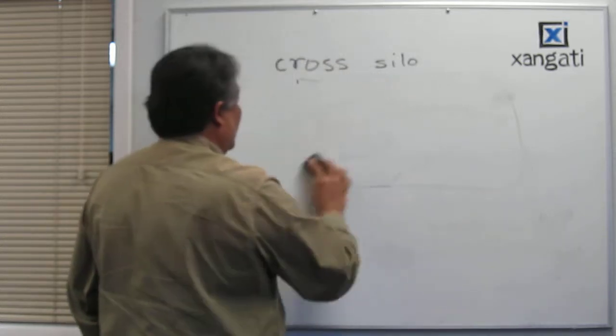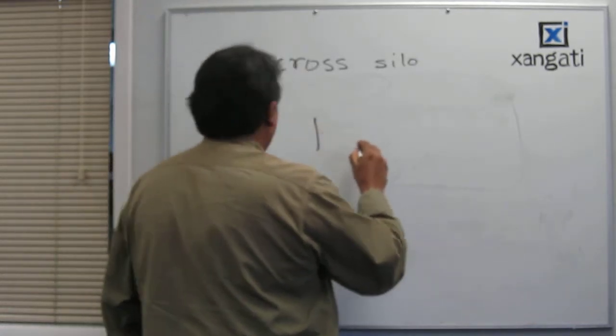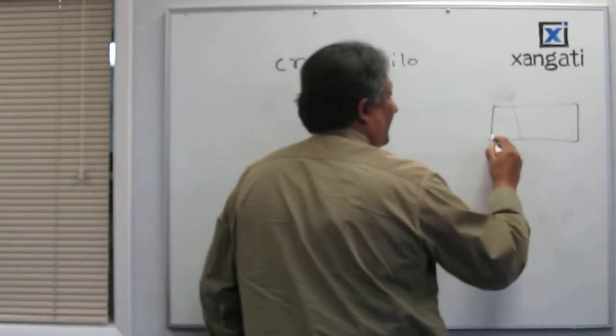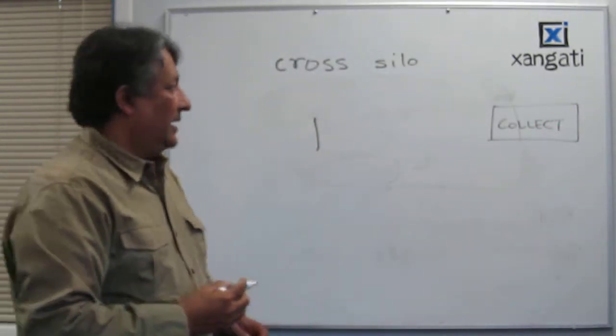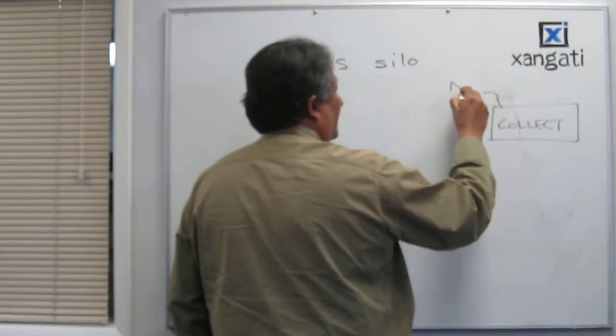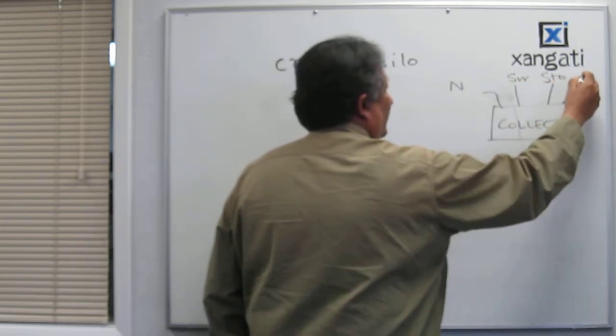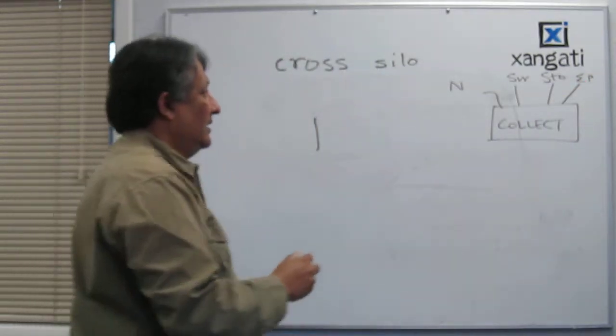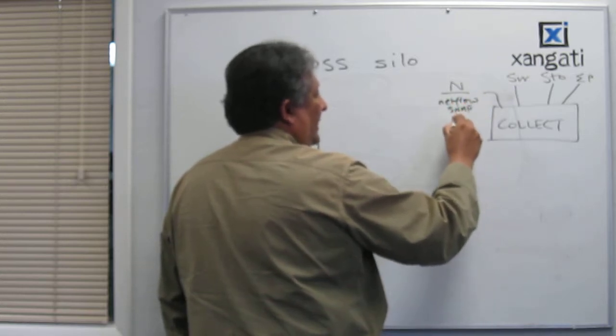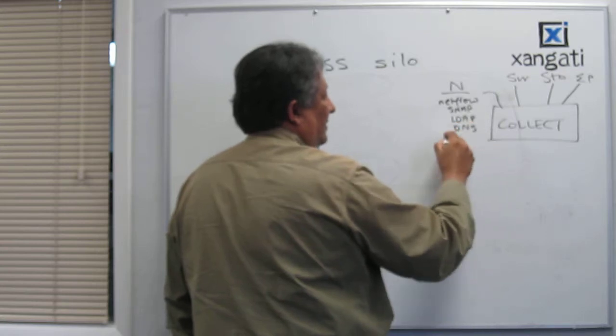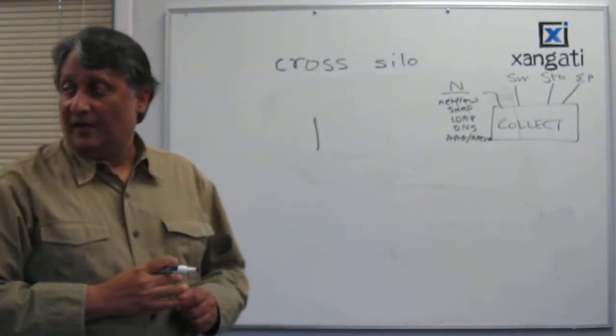What I'm going to talk about just quickly is what Zengati does. Zengati has something called collection. And it basically deals with network, server, storage, and endpoints as of today. Network has things like NetFlow, SNMP, LDAP, DNS, AAA radius. These are examples of different kinds of data that we get from the network side.